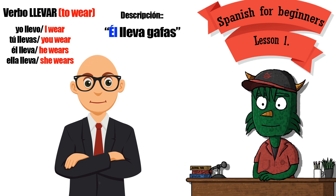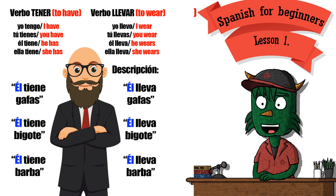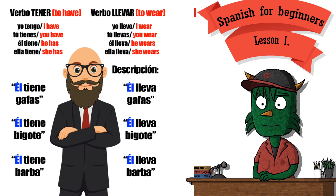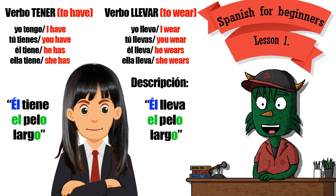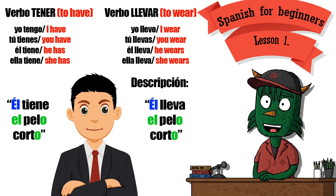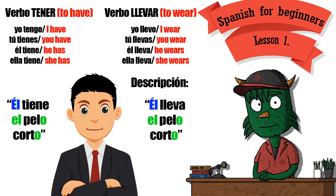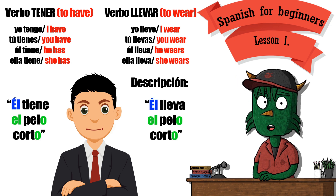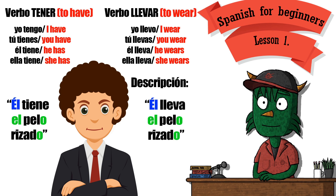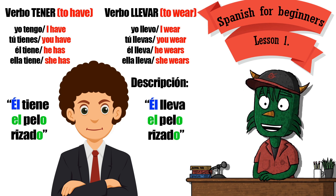Él lleva gafas. I can use verbo tener y verbo llevar to make a description. Él tiene gafas / Él lleva gafas. Él tiene bigote / Él lleva bigote. Él tiene el pelo largo / Él lleva el pelo largo. Él tiene el pelo corto / Él lleva el pelo corto. I'm making a description with the verb llevar — to wear — and the verb tener — to have. Él tiene el pelo rizado / Él lleva el pelo rizado.